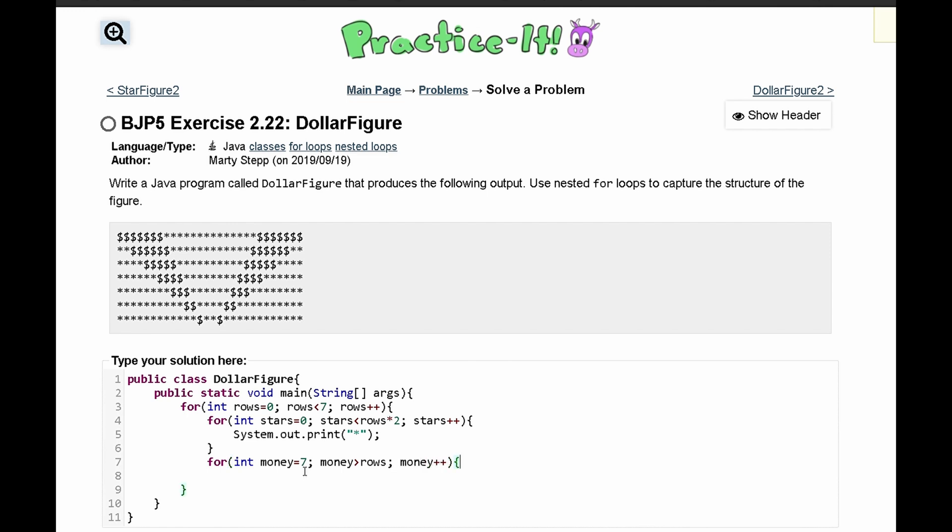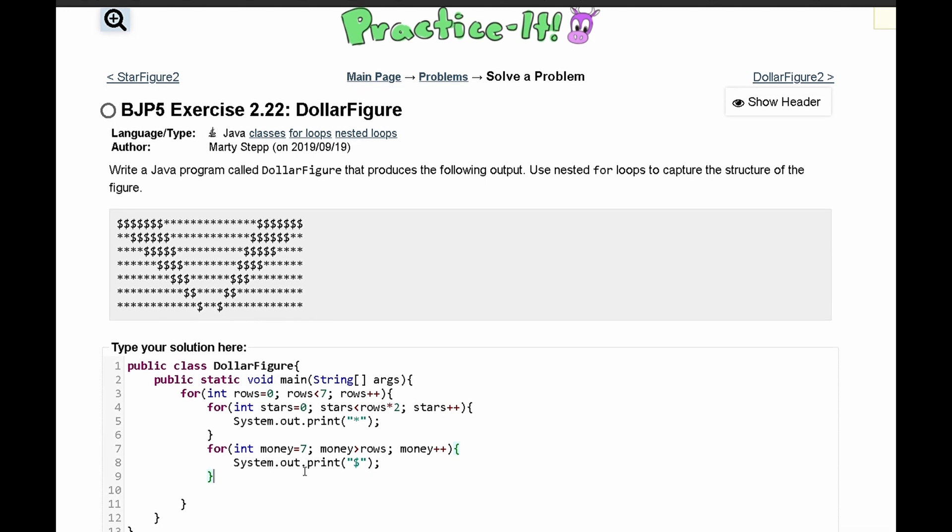In here we'll have a system.out.print and we'll just print out the actual money symbol. After this we need to look at these stars in the middle right here.